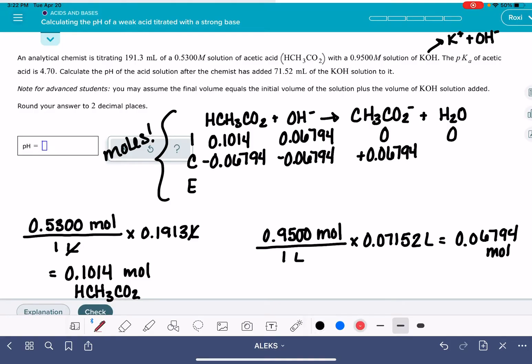And then once we get that number written in, we're just going to do the math down each one of the columns. So for our first column, it's going to be 0.1014 minus 0.06794. This means we have 0.03346 moles. Don't forget that these are moles. We have 0 moles of OH-, and then we have 0.06794 moles of CH3CO2-.